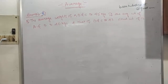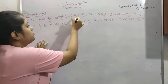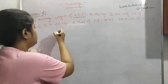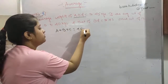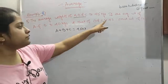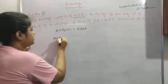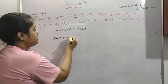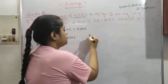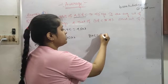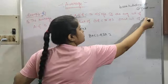Now let's take one last example. The average weight of A, B, and C is 45, so total weight is 45 × 3. If the average weight of A and B is 40, their total is 40 × 2. And the average weight of B and C is 43, so their total is 43 × 2. Find the weight of B.